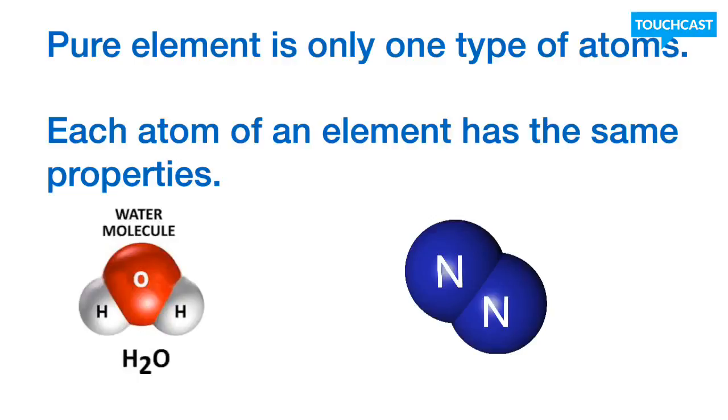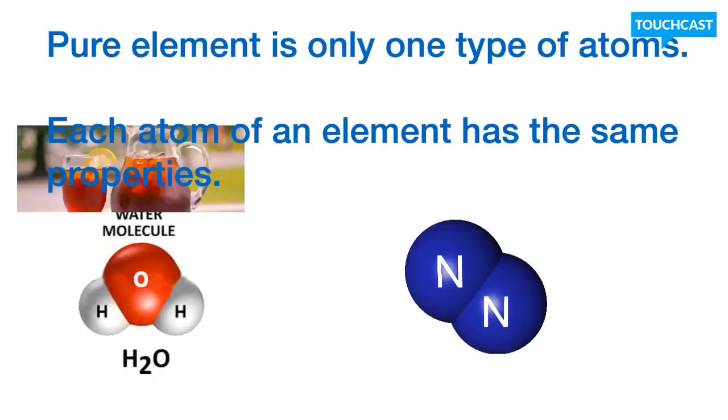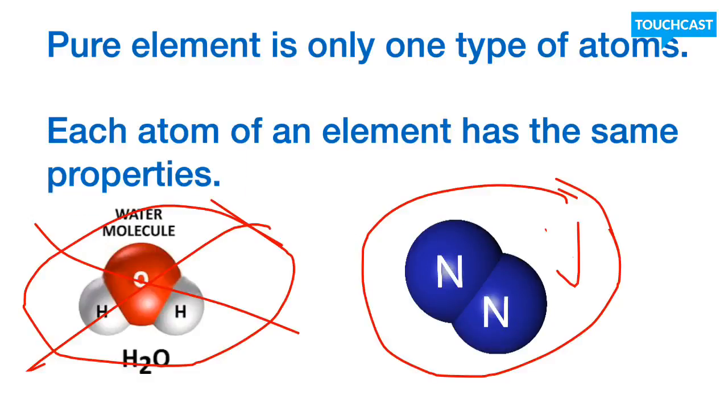So, let's go ahead and look at our examples at the bottom. Now, if you see the one on the left, it's not going to be a pure element because it only has two different types of elements. So, you can see hydrogen and oxygen present there. So, that's going to be basically a compound. Now, the one on the right is a pure element because it has only one type of atoms.